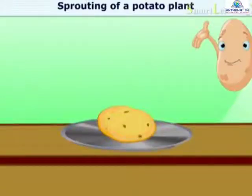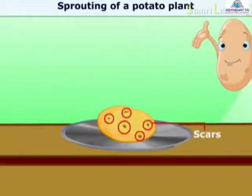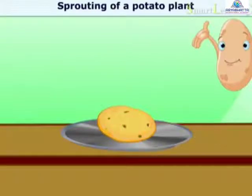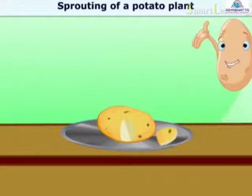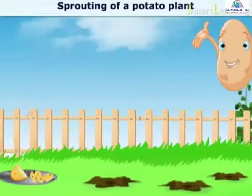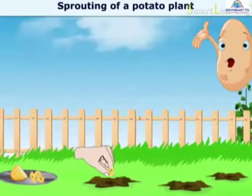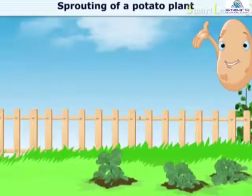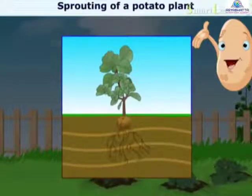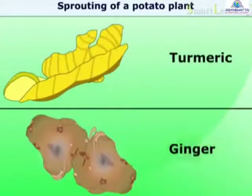Let us perform an activity to understand sprouting of a potato plant. Take a fresh potato and observe scars on it. These scars contain buds which are known as eyes. Now cut the potato into four or five pieces, with each piece having one scar. Bury these pieces in the soil and water them regularly. After a few days, the buds present in the scars develop into stems and leaves. Likewise, we can grow ginger and turmeric.